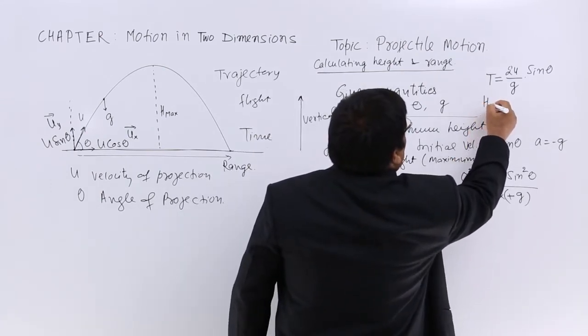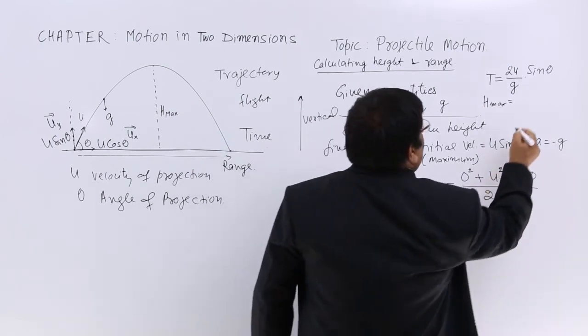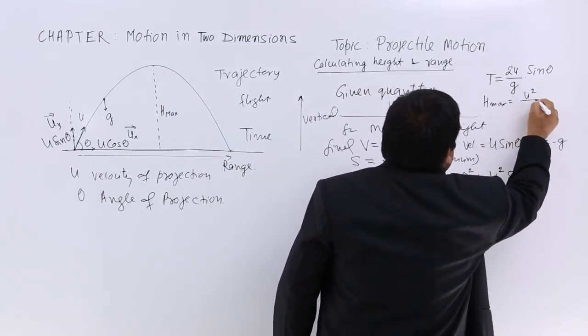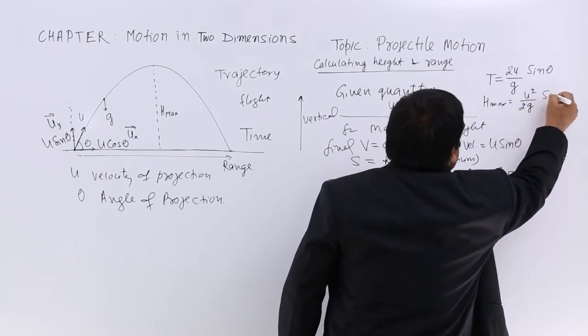This is the maximum height: H_max = u² sin² θ / (2g).